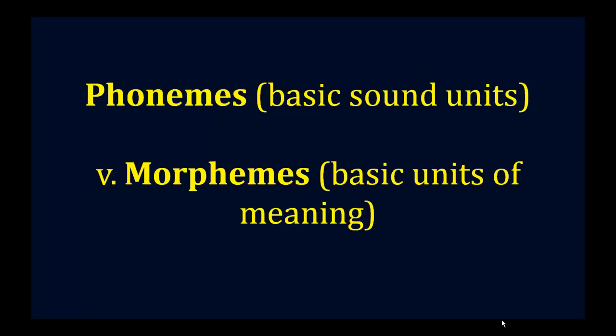Phonemes and morphemes. Phonemes are the basic sound units in linguistics. B, P, U, D, F, N, M. Those are basic sound units. They don't mean anything by themselves. They don't have meaning. They're just sounds, phonemes.